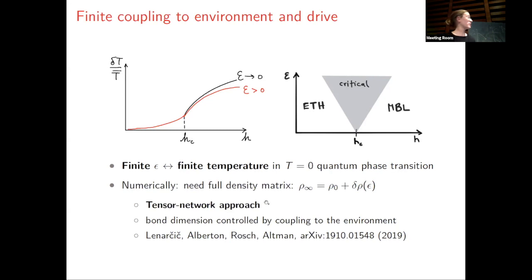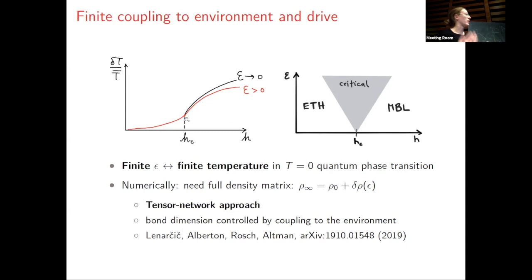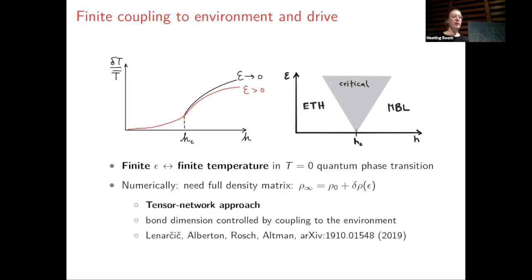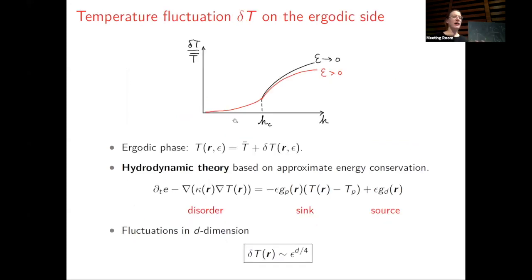This also has a numerical advantage because finite coupling to the environment limits the amount of entanglement that can build up in such a system. So now one can use tensor networks to go essentially across the phase transition, since the bond dimension will be naturally controlled by the strength of coupling to the environment. Before going into this microscopic calculation, I would like to discuss what we can learn analytically about the dependence on coupling to the environment.